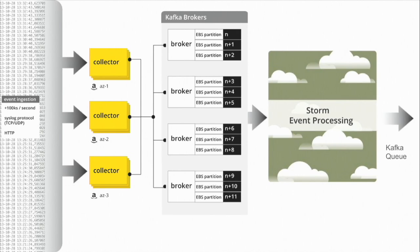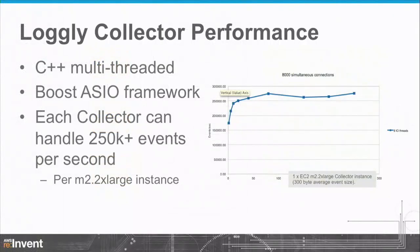From Kafka we move into the pull side of our infrastructure — this is where Storm comes in. Storm pulls from Kafka, which is a model other people use as well. This is what we call the first stage of our ingestion pipeline. The collectors are built on the Boost ASIO framework, multi-threaded C++. They're multi-threaded and we built them on the Boost ASIO framework, which is a joy to code against — I recommend it for anyone building high-performance network software. After Storm, we go into more Kafka queues, but this push-to-Kafka, pull-from-Kafka is the main design principle of our ingestion pipeline.